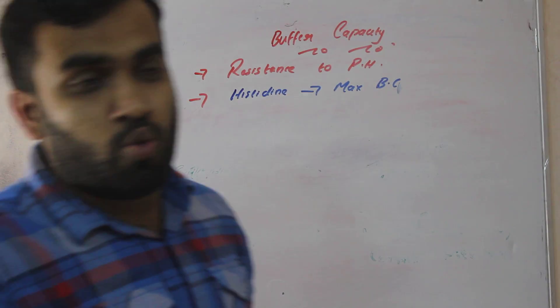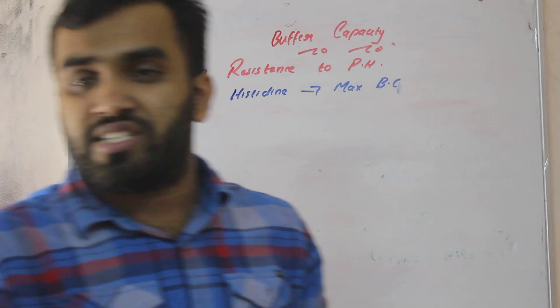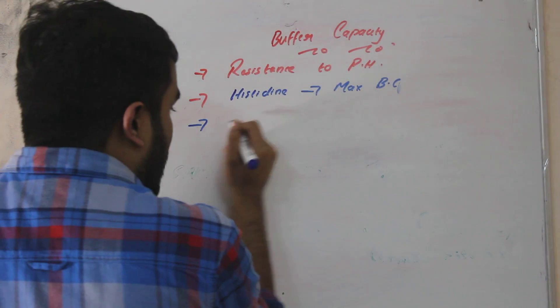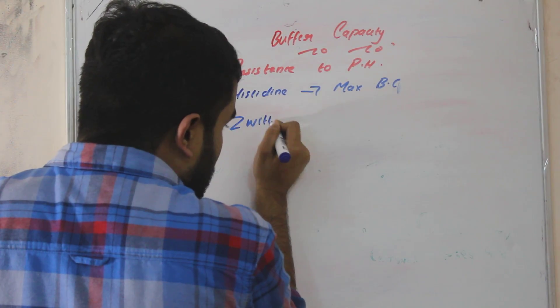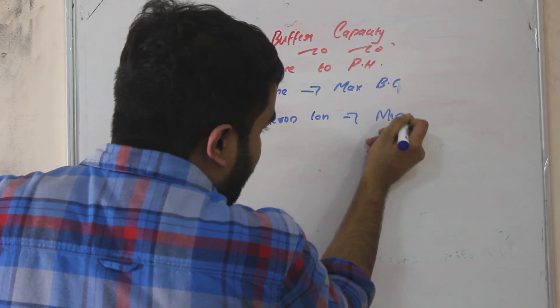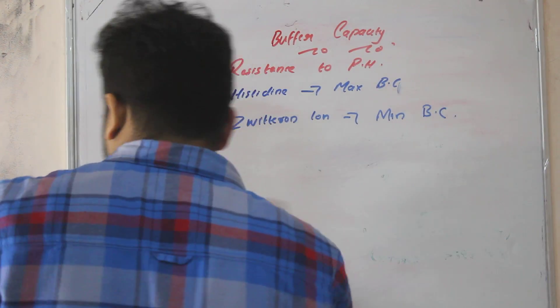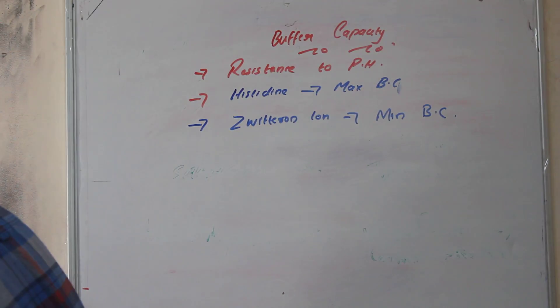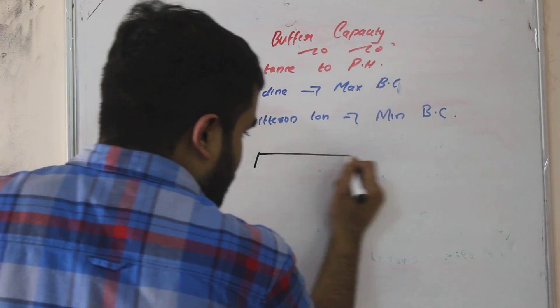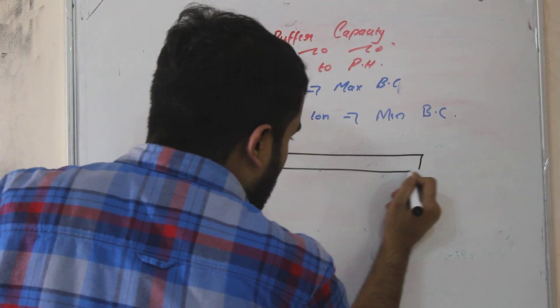What molecule is having lowest buffer capacity? That is zwitterion. Zwitterion having minimum buffer capacity. Now you will ask me what is zwitterion, right?